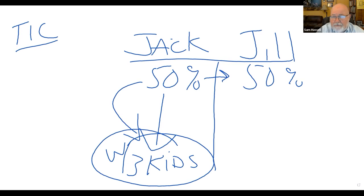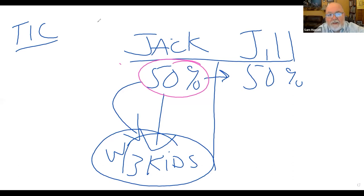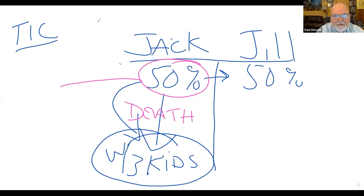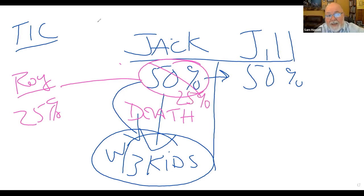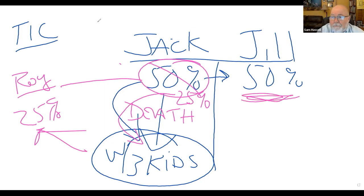In tenancy in common, ownership interests can be unequal — 75/25, 60/40, or any split. Each owner holds an undivided interest and can sell, convey, mortgage, or transfer that interest without the other's permission. For example, Jack can sell 25% of his share to Roy without Jill's consent. When Jack dies, his remaining 25% goes to his kids. Roy owns 25%, Jill still owns 50%.